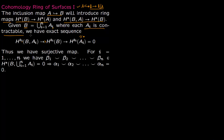So if you have some β_i here, it corresponds to α_i, or α_i gets lifted to β_i. What we want to do is find the cohomology ring structure on B — specifically on this space B which is a union of some contractible spaces.